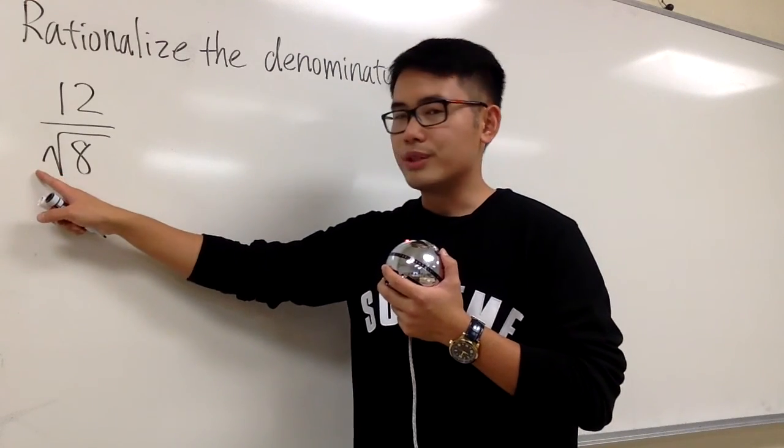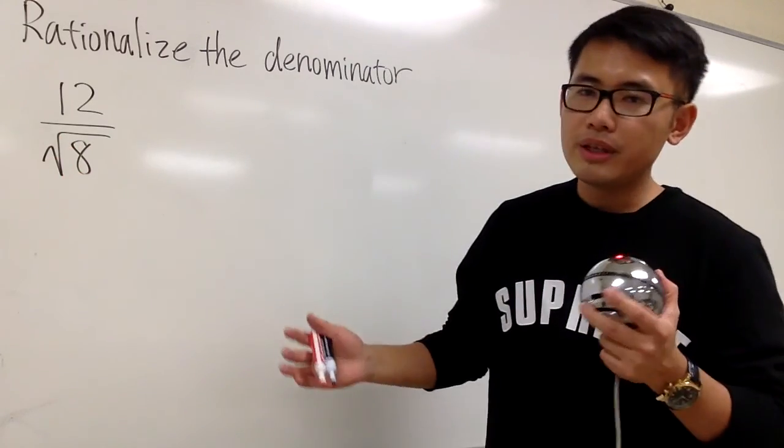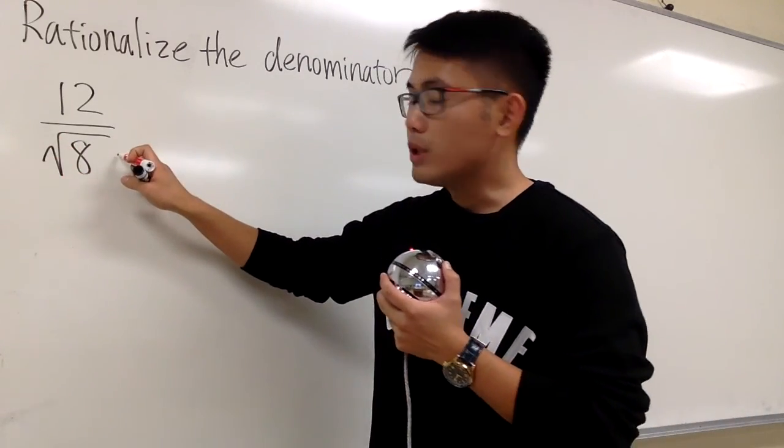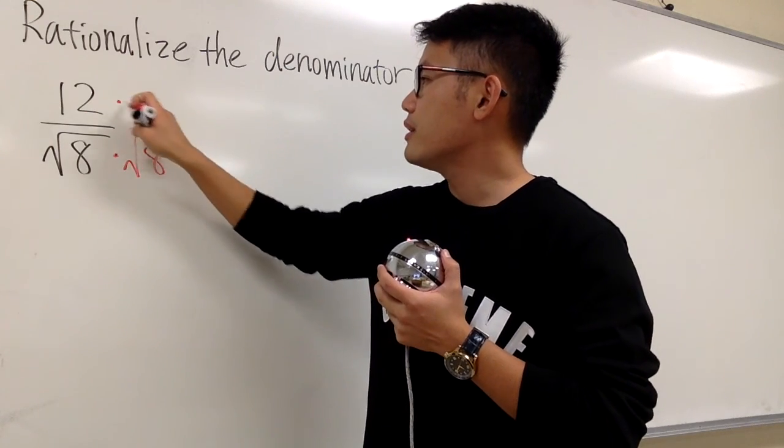This is a square root, right? And when we have square root of 8, an irrational number right here, typically a lot of people will just go ahead and multiply the top and bottom by the same thing. And it works. Square root of 8 on here and here.